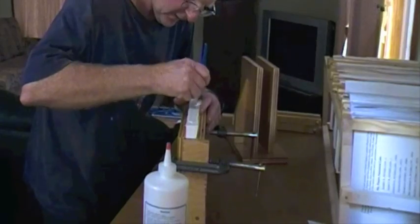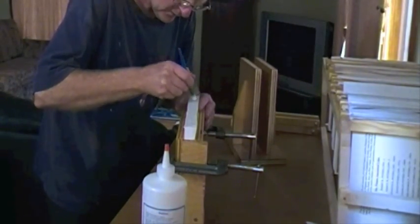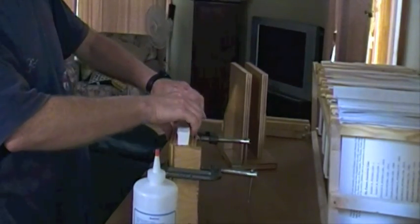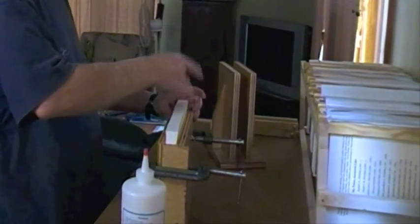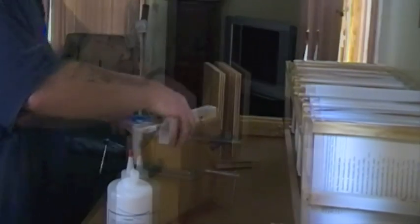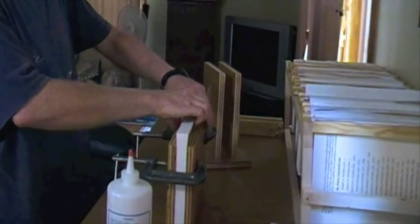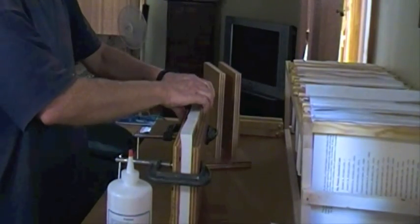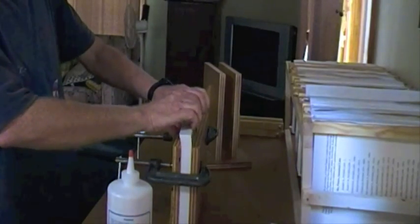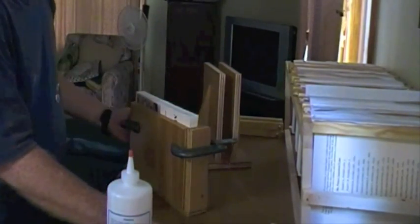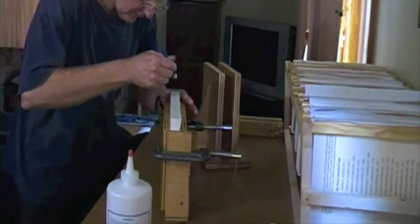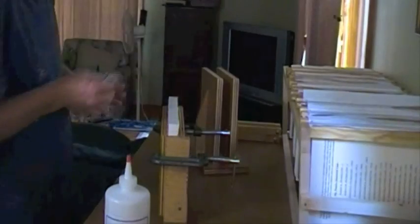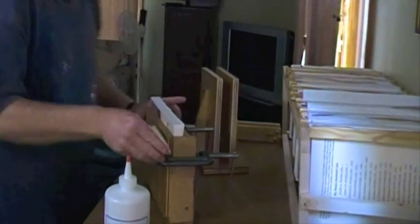Paint it across the grain. Make sure you work it in good. Now work your pages. Just get the glue down between. Work that glue in again. Clean your edge off on the sides.